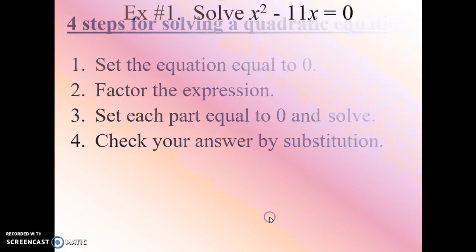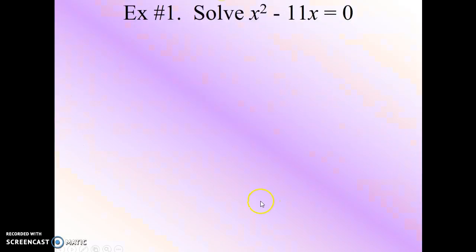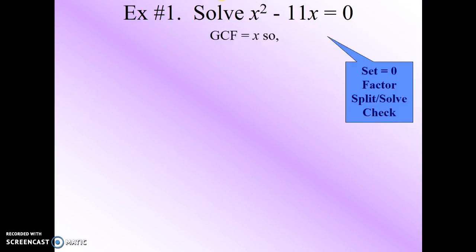Okay, so let's move on to our first example. Here we're asked to solve x squared minus 11x equals 0. So the first thing we notice is that this has a greatest common factor, and that greatest common factor happens to be x. So when we factor out x, we end up with x times x minus 11 equals 0.